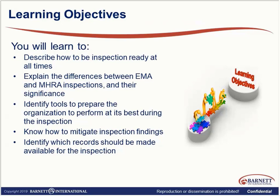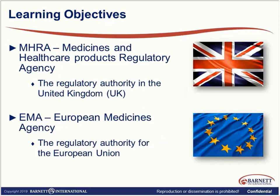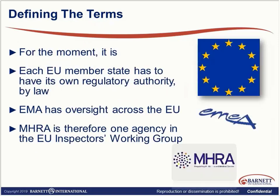We'll also talk about tools, how to prepare, how to organize, and how to mitigate any inspection findings, as well as how to identify any records that need to be made available during an inspection. MHRA is the UK equivalent of FDA, while the EMA is the EU equivalent of FDA. MHRA specifically stands for Medicines and Healthcare Products Regulatory Agency, and then you have the European Medicines Agency.